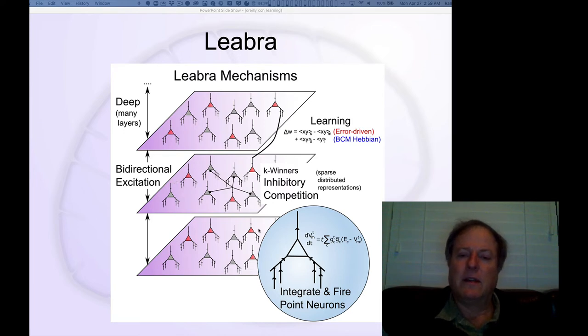We also have inhibitory competition, which is critical for enabling self-organizing learning to work, but also plays a critical role in the context of error-driven learning, enforcing representations to be sparse but yet still distributed.